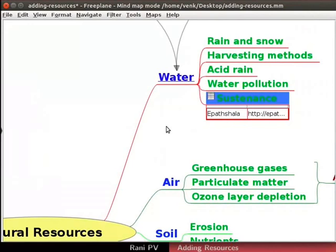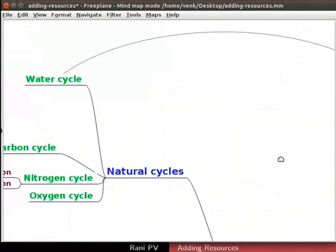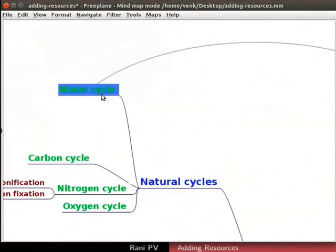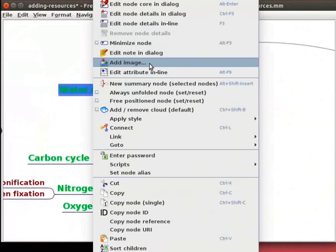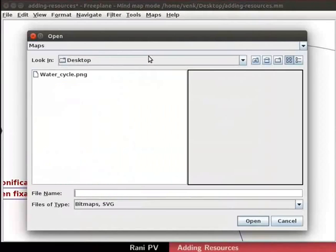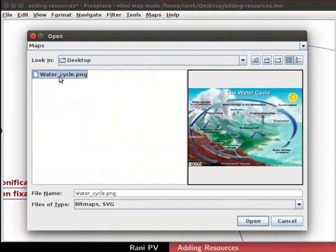Let's attach an image as learning resource to the map for water cycle. Select the Water Cycle node, right click to open the context menu and choose the Add Image option. A dialog box opens. Navigate to desktop directory. I have downloaded a free to share and use image from USGS website for study. It is saved in my desktop directory. Choose the watercycle.png file and click on Open.